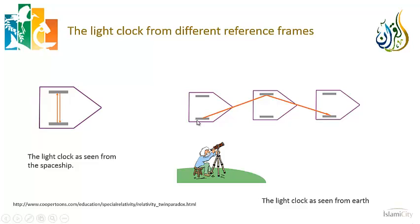Now, from the ground, the person on the ground sees the pulse of light being emitted, but then when it is received on the top mirror the spaceship has moved, and then when it is reflected back again to the bottom mirror the spaceship has moved again, and so the pulse of light actually traces this path rather than goes straight up and down.